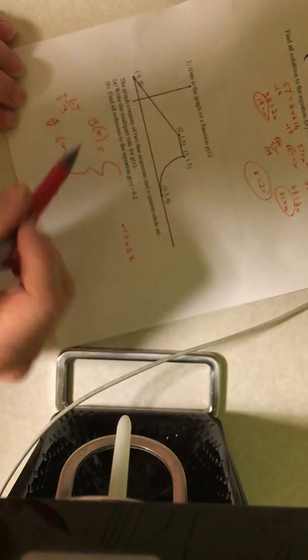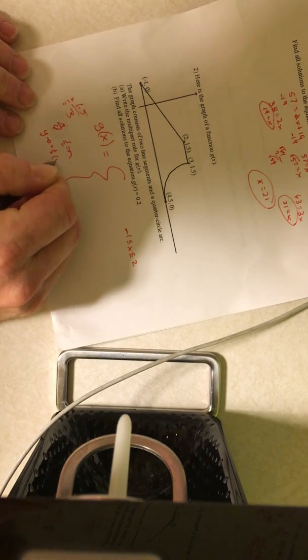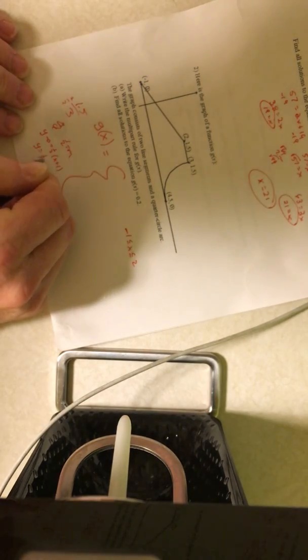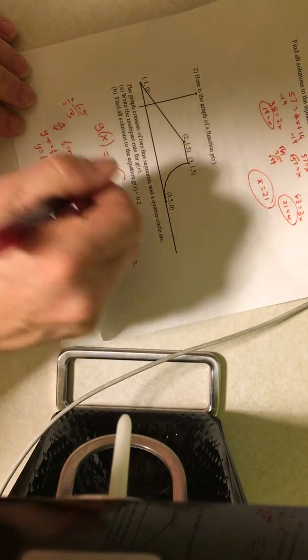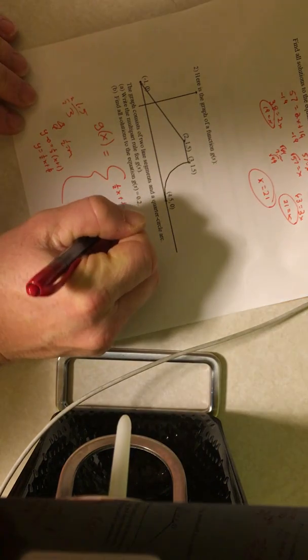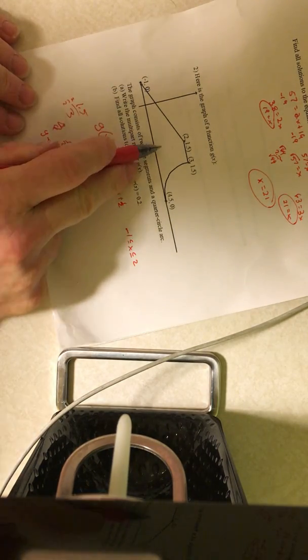And I don't know this y intercept, so I'll use the point slope form of the line. y minus 0 equals 1 half times x minus a negative 1, which would be x plus 1. So y equals 1 half x plus 1 half. So I have 1 half x plus 1 half if I use an x value from negative 1 to 2.